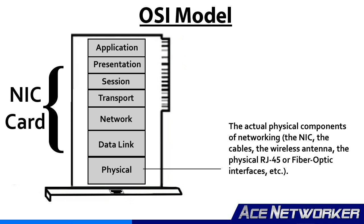Last but not least, you have the physical layer. The physical layer is the actual physical media or medium used to transmit and receive data in bits, either 0s or 1s. This is essentially the physical hardware — the NIC interface, the cables, the antenna — any physical hardware that makes up the network is basically in the realm of the physical layer.